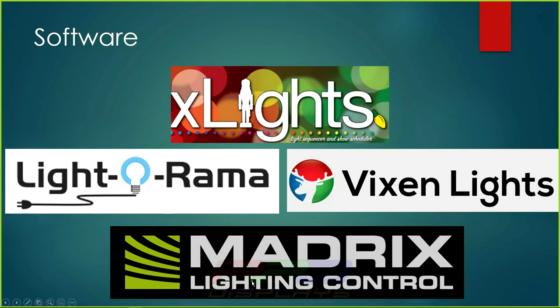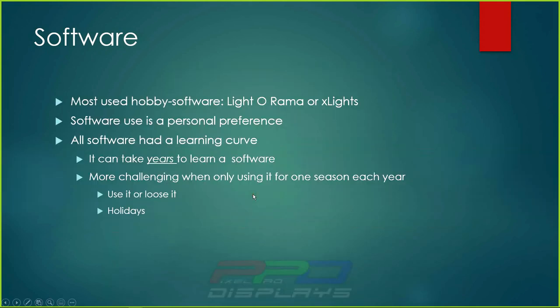Madrix is a commercial company — we use it in commercial installs, so it's not typical to purchase for home use. LightORama is software you have to purchase; xLights is free with donations accepted, and the same with Vixen. LightORama and xLights are the two most popular. This is personal preference — you can't say one software is better than another. It's like saying 5-volt pixels are better than 12-volt pixels. All software has a learning curve.